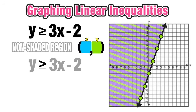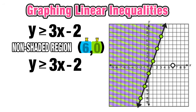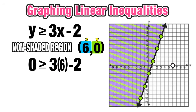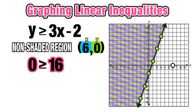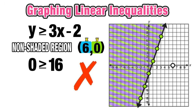Finally, a point in the non-shaded region: (6, 0). Substituting x = 6 and y = 0: 3 times 6 equals 18, and 18 minus 2 equals 16. We get 0 ≥ 16, which is not true. This shows why points in the non-shaded region are not solutions. To recap: any point in the shaded region or on the line is a solution; any point in the non-shaded region is not.